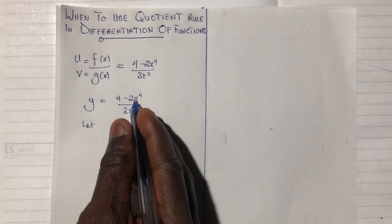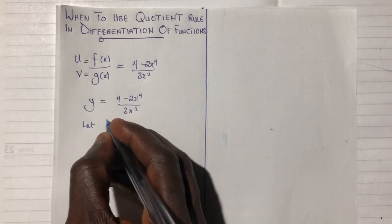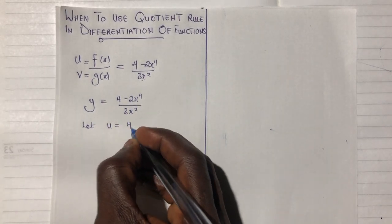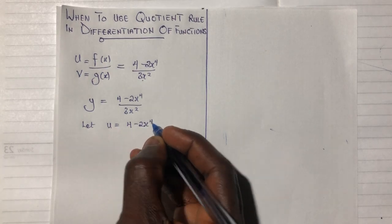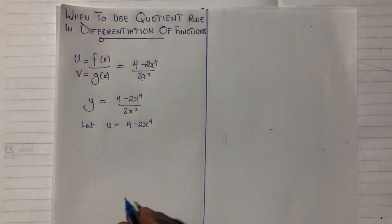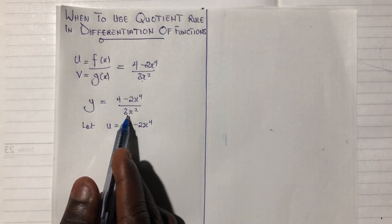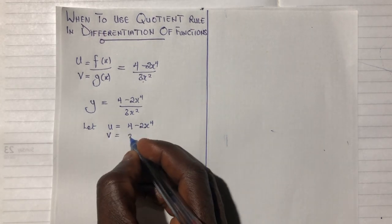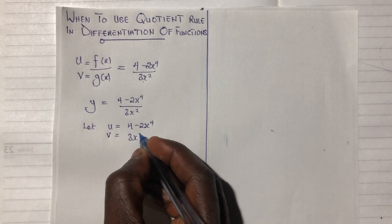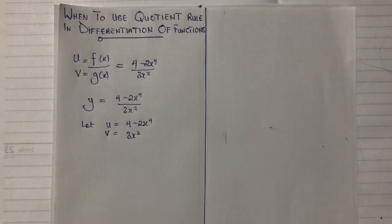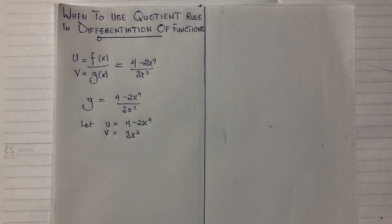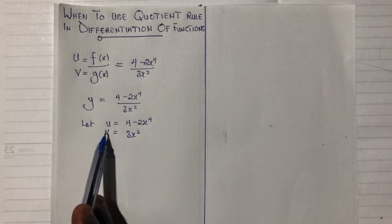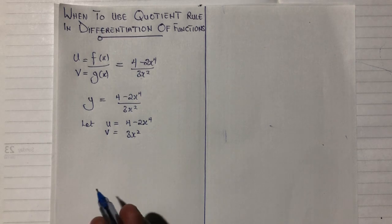Since we are about to apply the quotient rule, we represent the first function — let u be equal to (4 minus 2x) raised to the power 4. Then v will be equal to 3x squared. In the next step, all you need to do is differentiate u with respect to x and differentiate v with respect to x.